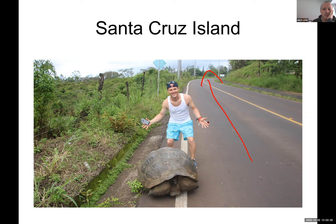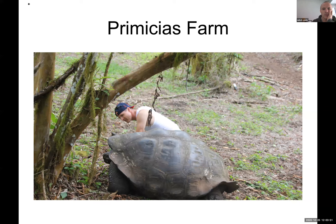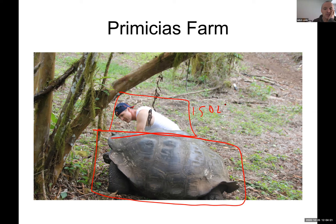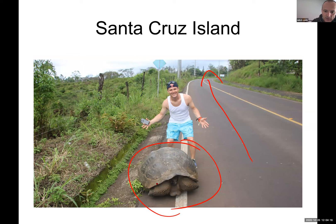These little tortoises can roam freely, but they got scared when they saw me, so they just stayed there. I took a picture trying to be funny. What I'm really trying to show you is how big these things are. Look — I'm not a big guy, but this tortoise is about 150 pounds. This other one is about 400 to 500 pounds. You can figure out what type of tortoises you have by looking at the carapace and the surrounding environment.